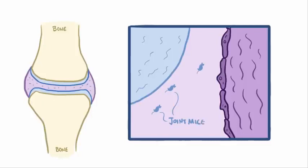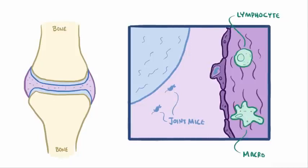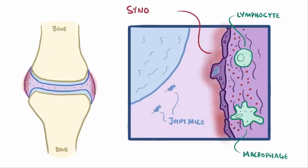As type A cells in the synovium attempt to remove the debris, immune cells like lymphocytes and macrophages are recruited into the synovial membrane, which produces pro-inflammatory cytokines that ultimately cause inflammation of the synovium as well, called synovitis.